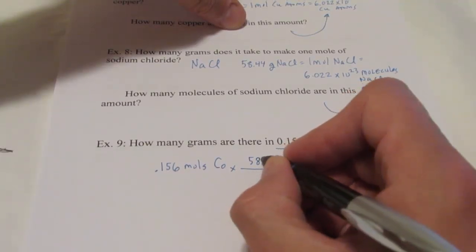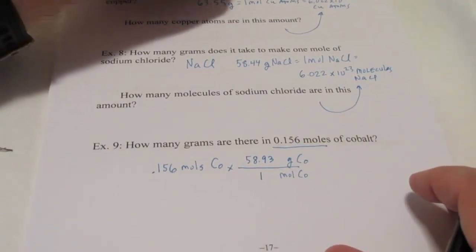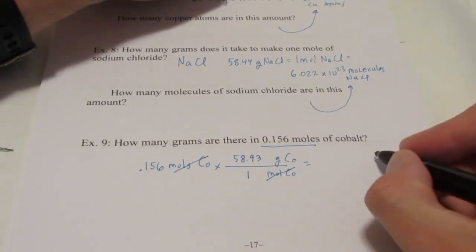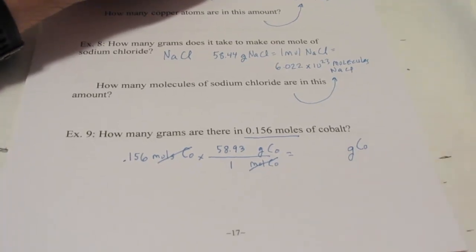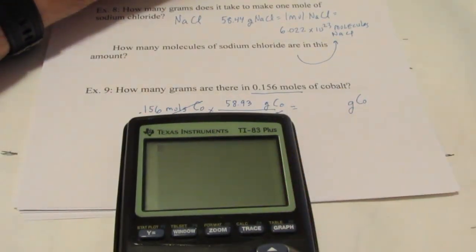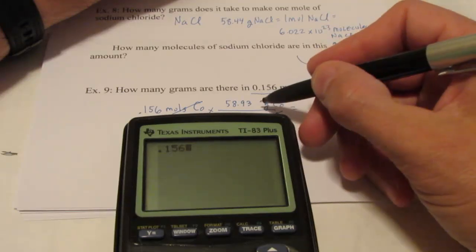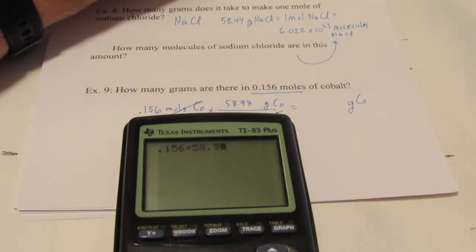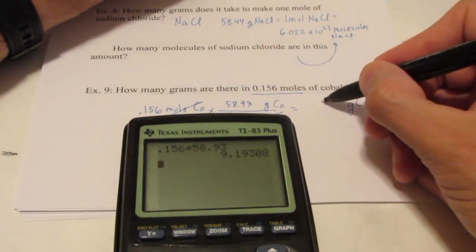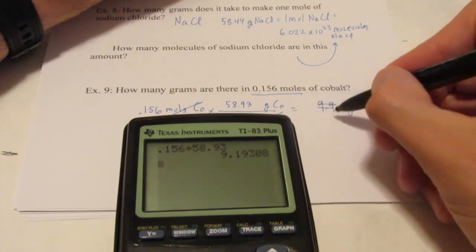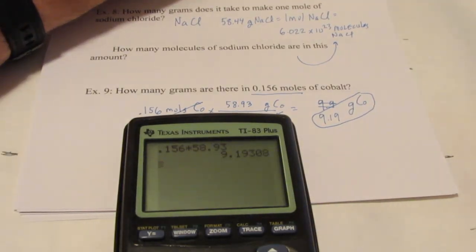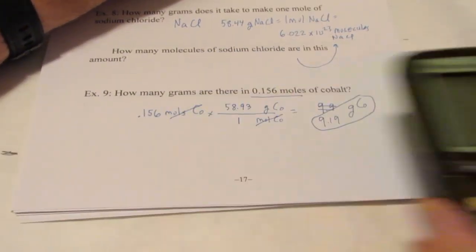So 58 point, we're going to go to the nearest hundredth, grams. So you can see moles of cobalt divide out, and I'm left with grams of cobalt. So all that's left is my calculating. So 0.156, and since 58.93 is on top, we're going to multiply by it. I get to three significant figures, 9.19, there we go, I fixed it, grams of cobalt. That would be 0.156 moles of cobalt.